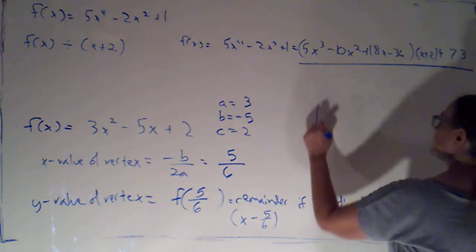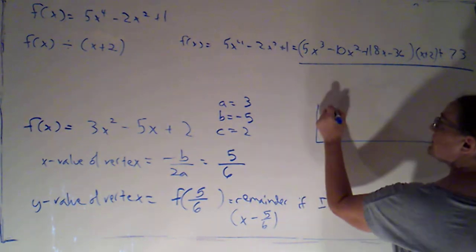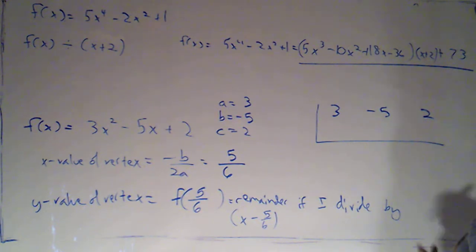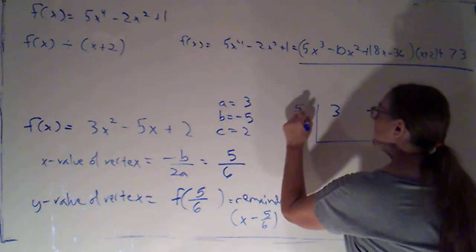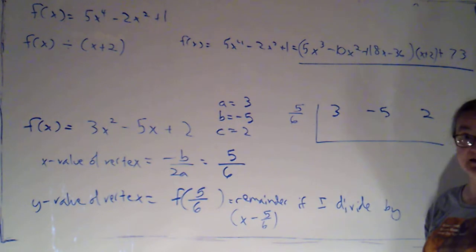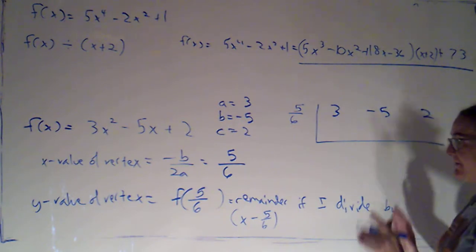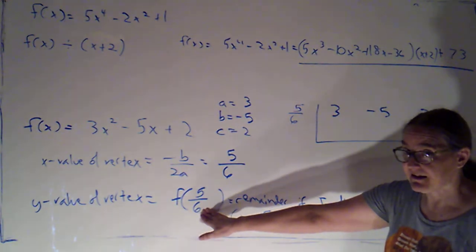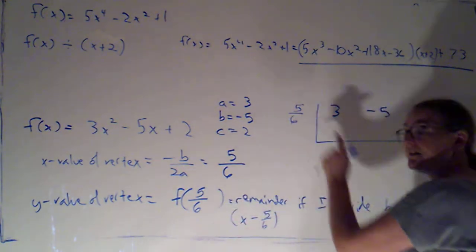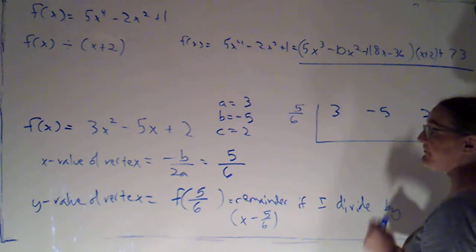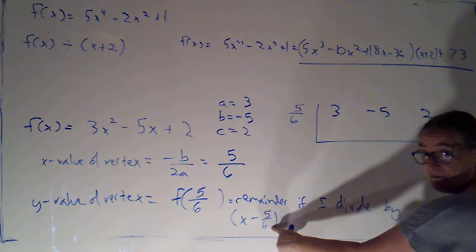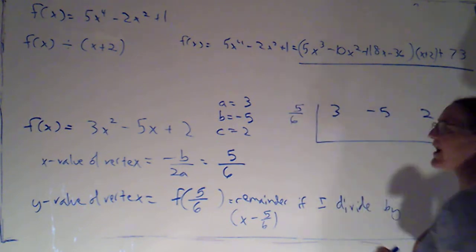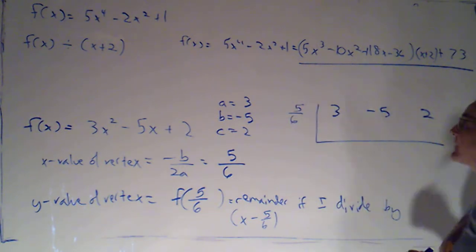Now if I were to use synthetic division and say, okay, we've got 3 x squareds, negative 5 x's, plus 2. The number that goes here will be 5 sixths. Be very careful. If I'm trying to plug this in, the remainder I'm looking for is the remainder I get if I divide by x minus that number. But I would pre-change the sign, so I would change it back to a positive 5 sixths there.